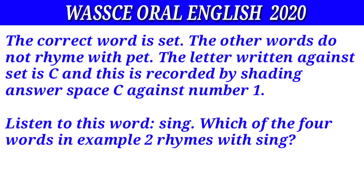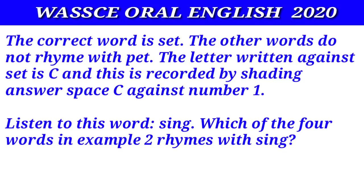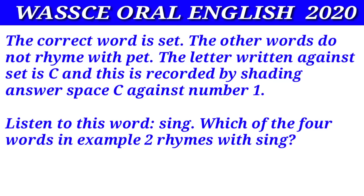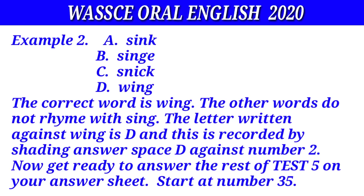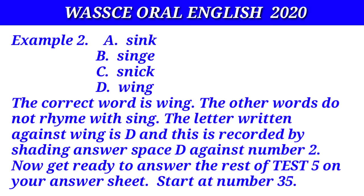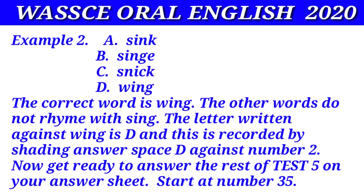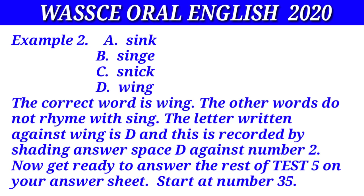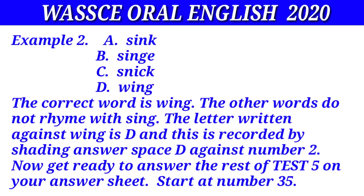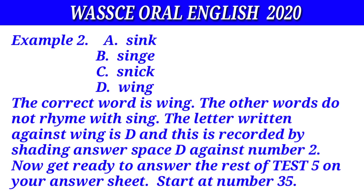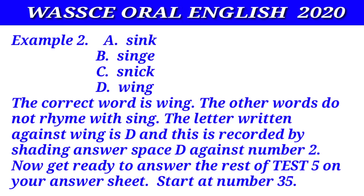Example two: listen to this word — sing. Which of the four words in example two rhymes with sing? The correct word is wing. The other words do not rhyme with sing. The letter written against wing is D, and this is recorded by shading answer space D against number two. Now get ready to answer the rest of test five on your answer sheet. Start at number thirty-five.